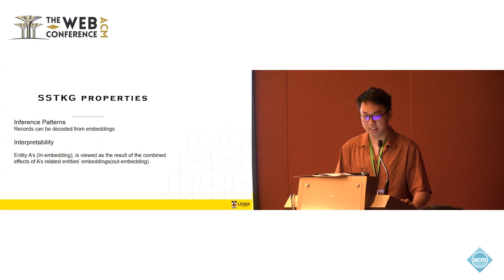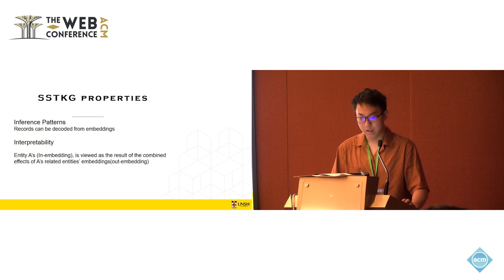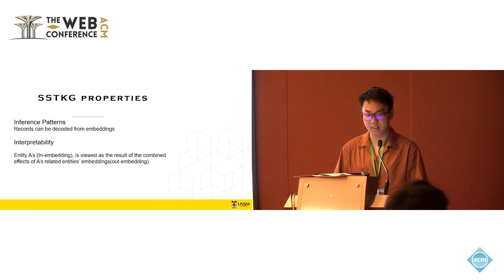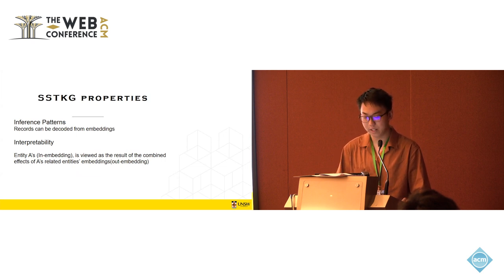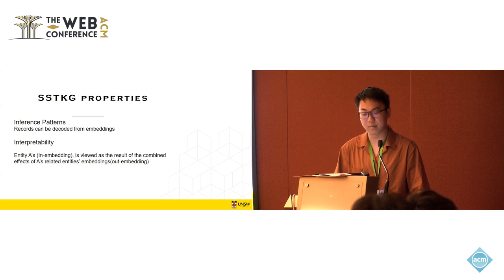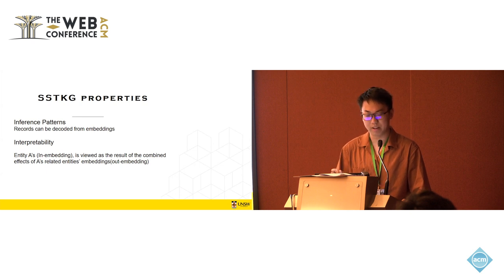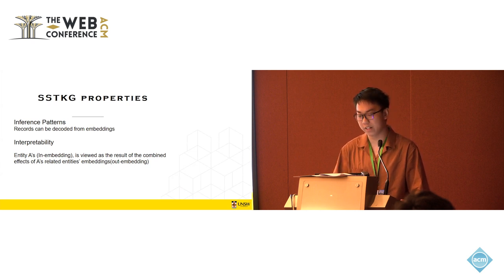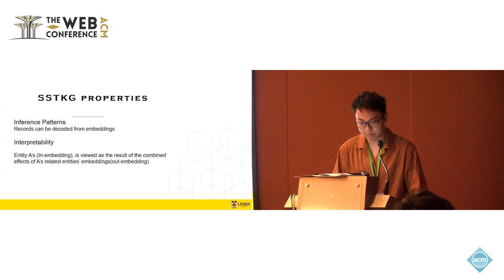So the SSTKG actually has some properties. The first is influence patterns. In training process, we first get static, then out embedding, then in-embedding. And the process is reversed when doing inference. And actually the predicted value is first contending entities' future in-embedding, then decoded to out embedding, and then temporal records. And the second property of the SSTKG is interpretability. The whole feeding and training process can simply be explained as a process of finding a proper embedding that incorporates an entity's records. For example, entity A's in-embedding is viewed as the result of the combined effects of A's related entities, which is out embedding, during which the unidirectional relation between two entities can be calculated.